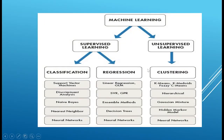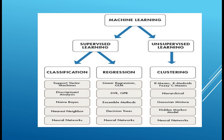We will study all these algorithms one by one. For classification, the major algorithms include support vector machines (SVM), Naive Bayes, K-nearest neighbors, neural networks, random forest, decision tree, and logistic regression. For regression, the major algorithms include linear regression, SVR, GPR, ensemble methods like bagging, boosting, extreme gradient boosting, decision tree, and neural networks.